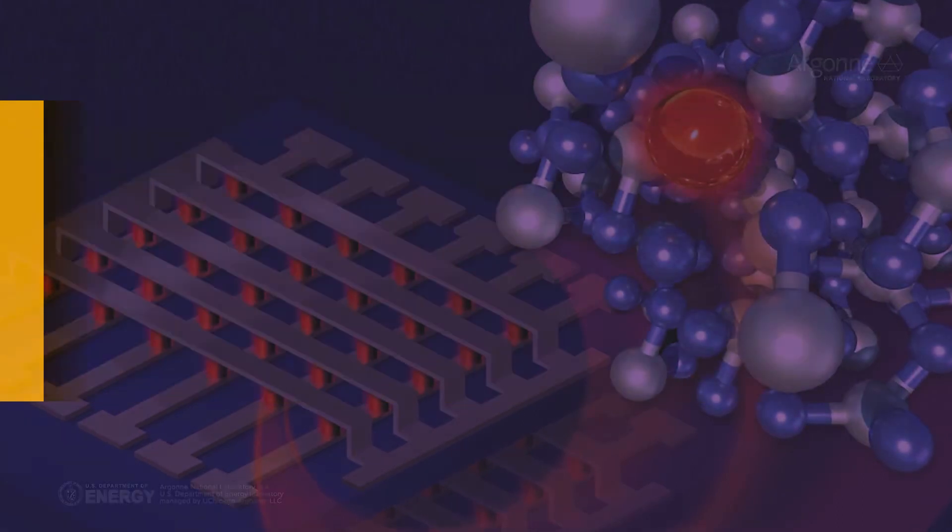When we look at an exascale machine, for example what's out of Oak Ridge that's on the top 500 list, that machine can do a billion-billion operations per second, or 10 to the 18th, which is exascale operations per second. It requires about 20 megawatts. When you look at 20 megawatts over the course of a year, that can cost about 500,000 to a million dollars to maintain that amount of power to the system.